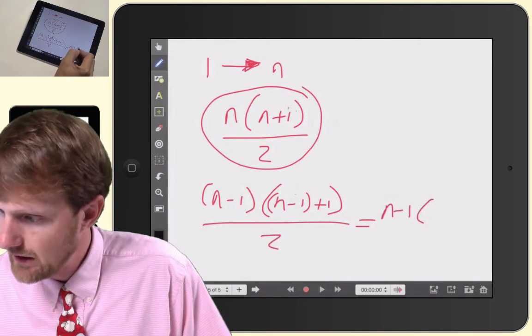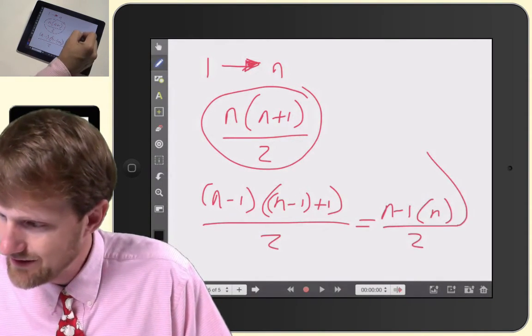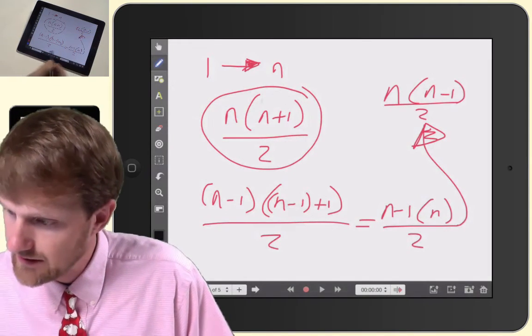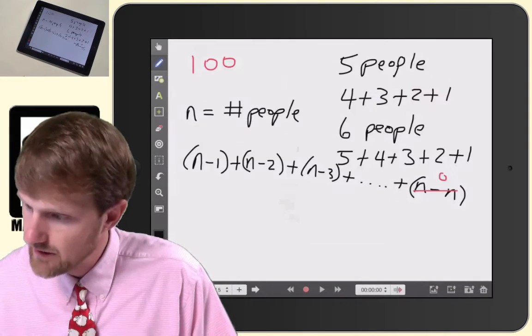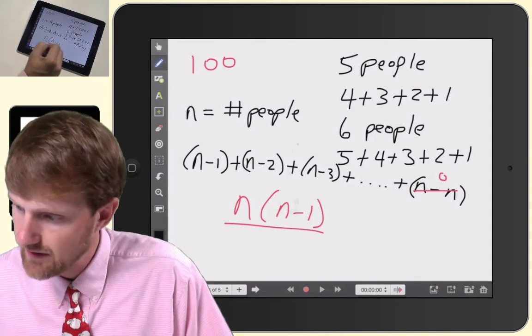which results in n minus one times n all over two. And a better way to write it is n times n minus one divided by two. So our rule over here is going to be n times n minus one divided by two.